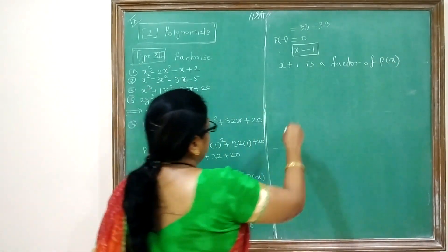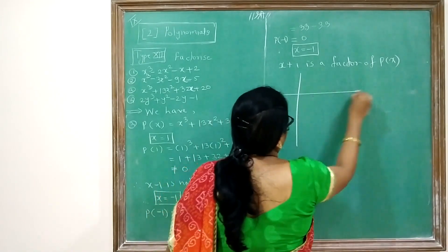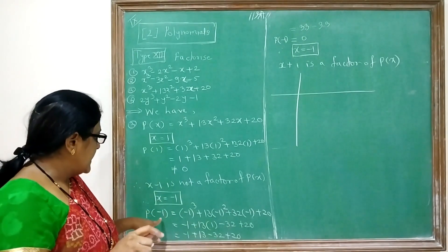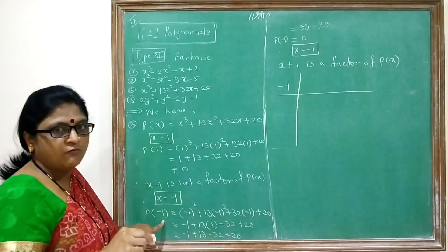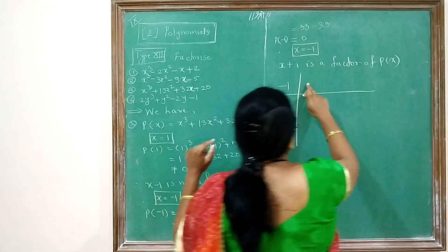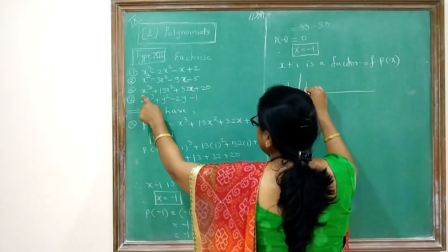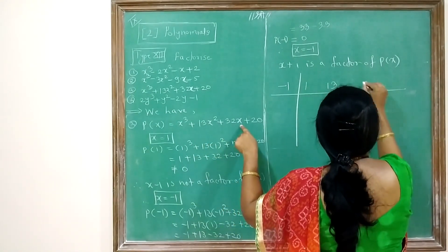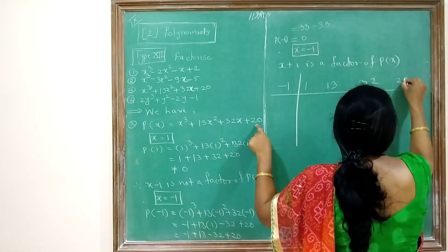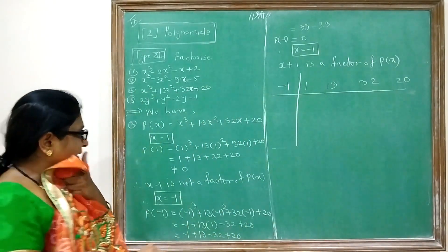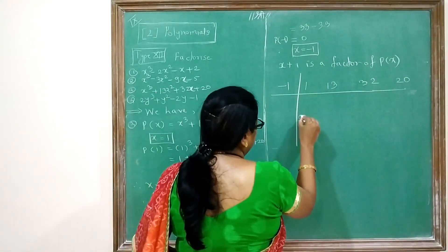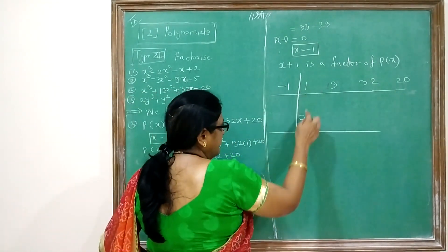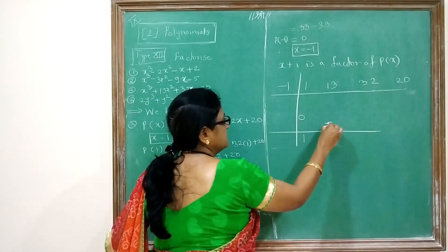Now see the second method — synthetic division. Since x = −1 gives 0, we write −1 on the left. The coefficients of P(x) are: x³ coefficient is 1, x² coefficient is 13, x coefficient is 32, and the constant term is 20. Always write 0 first. Then 1 + 0 = 1.